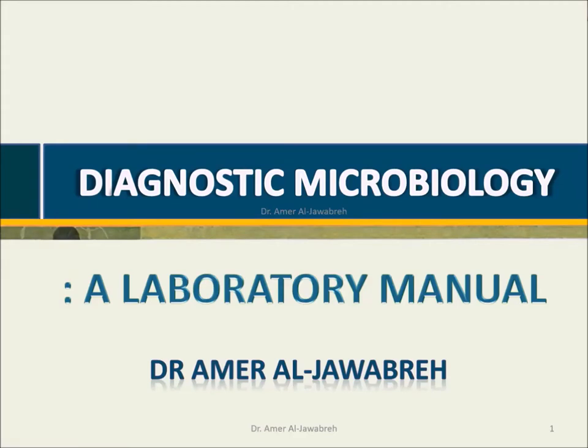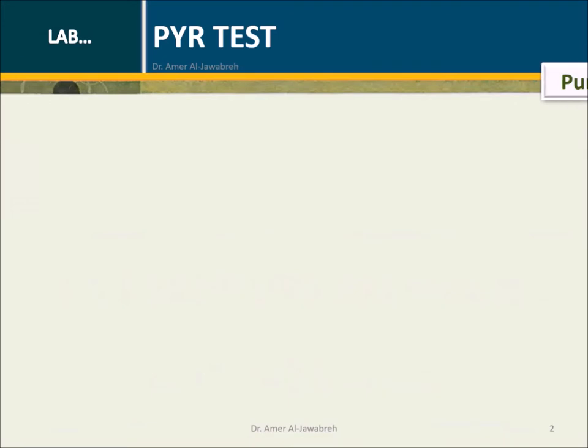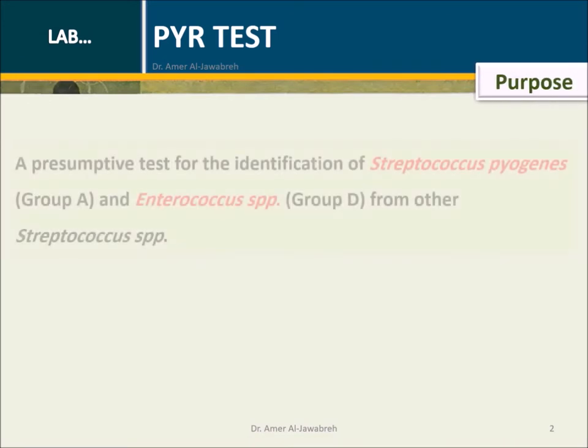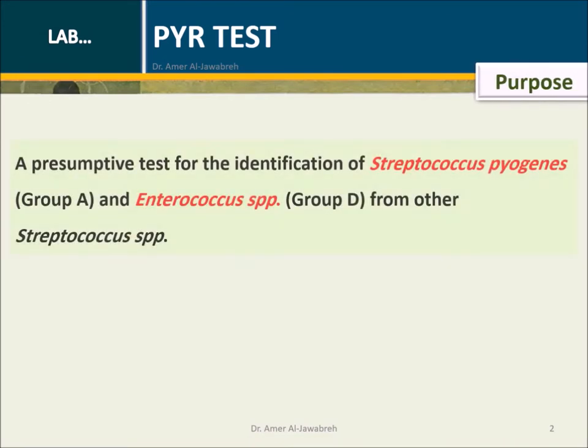Gnostic Microbiology, a Laboratory Manual. PYR Test. Purpose: a presumptive test for the identification of Streptococcus pyogenes, Group A, and Enterococcus species, Group D, from other Streptococcus species.